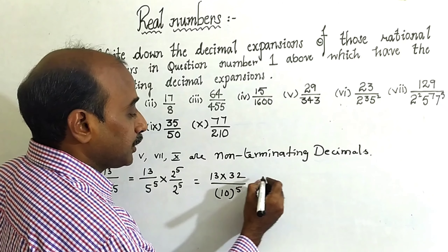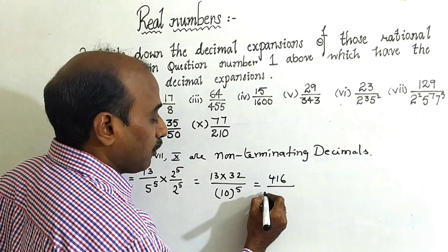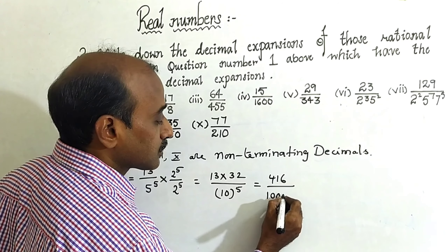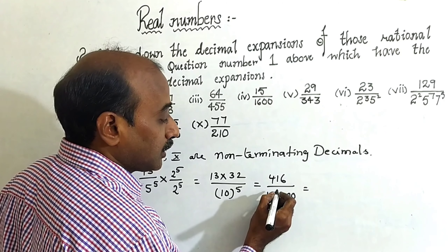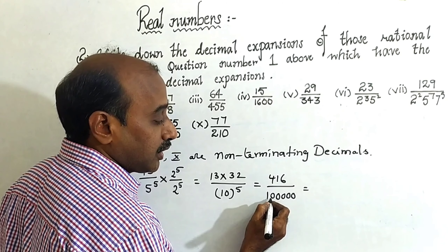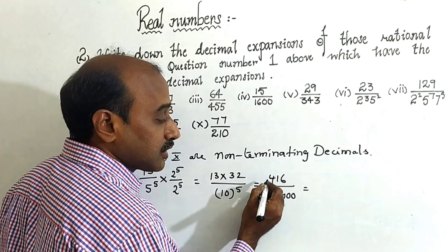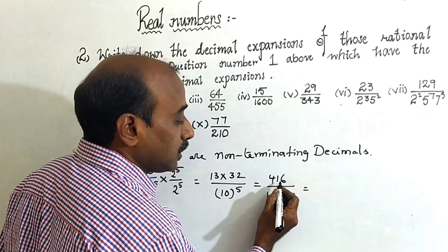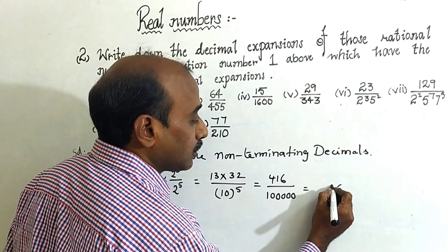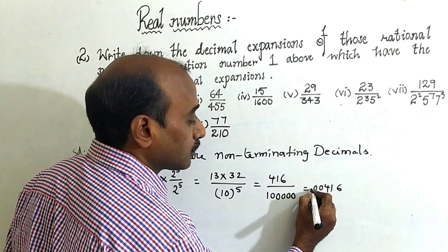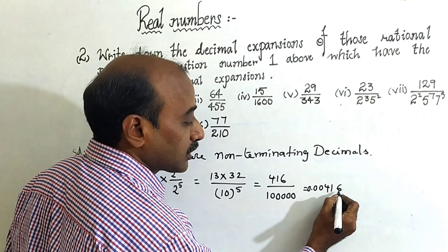That is equal to 13 times 32, which is 416, by 10 to the power 5, meaning 1 followed by five zeros. Now converting into decimal form: there are five zeros, so put the decimal after five digits from right to left — one, second, third, fourth, fifth — giving 0.00416.